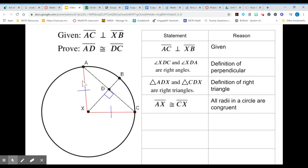We also know that AX and XC are both radii of the circle so therefore they have the same length and are congruent. By the reflexive property both triangles share the line segment DX so it's congruent to itself by the reflexive property.